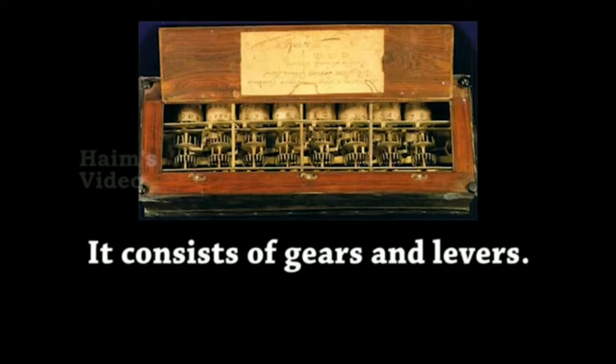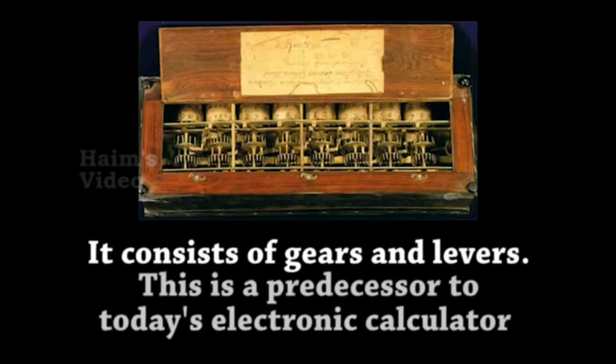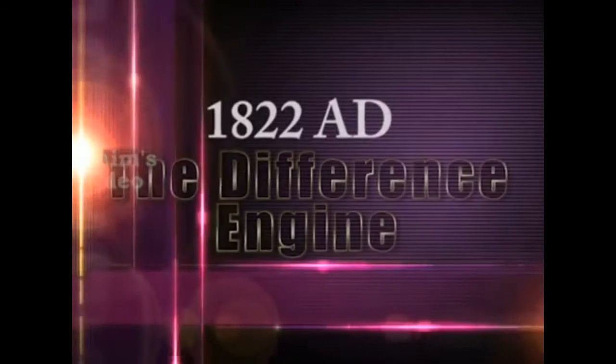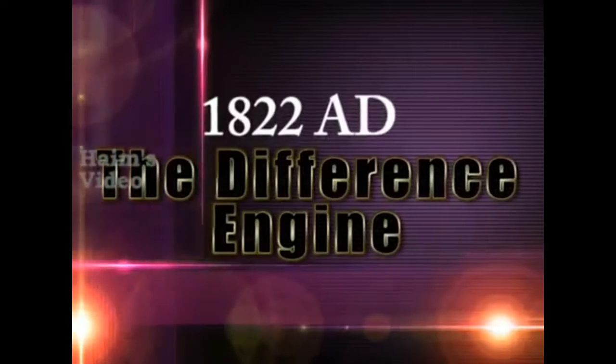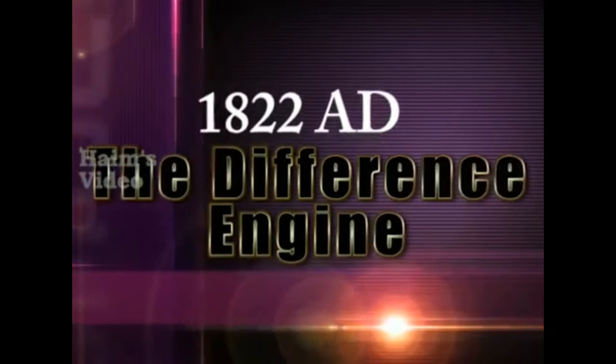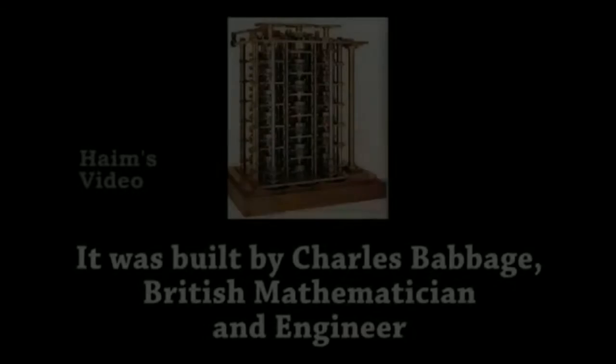1642 AD — the Rotating Wheel Calculator. It was first developed by French philosopher Blaise Pascal. It consists of gears and levers, and is a predecessor to today's electronic calculator.